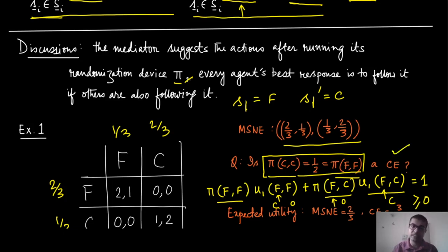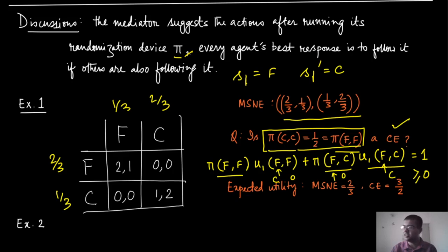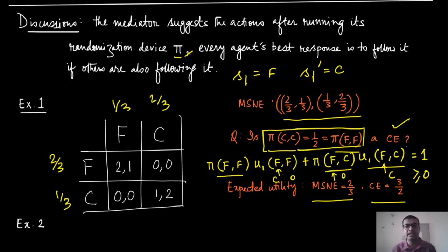You can also think about whether other correlated equilibria exist. Try other correlated strategies and check whether they satisfy the condition. Furthermore, the expected utility from this correlated equilibrium is higher than from the mixed strategy Nash equilibrium — MSNE gives utility two-thirds to both players, while the correlated equilibrium gives a much larger utility. When people coordinate, they can collectively do better, and that is another form of rationality.